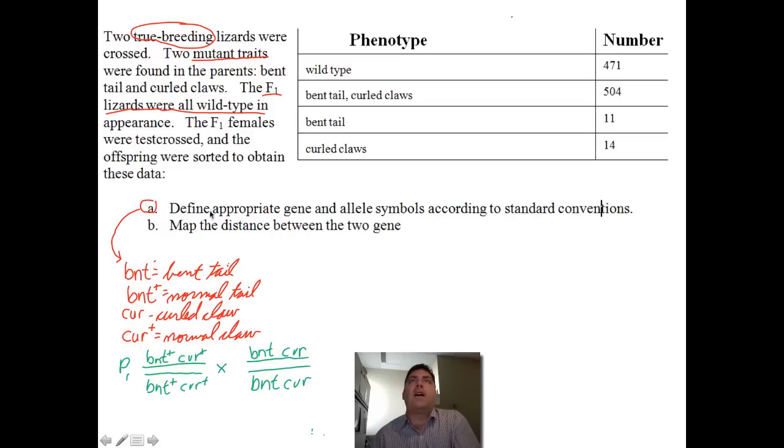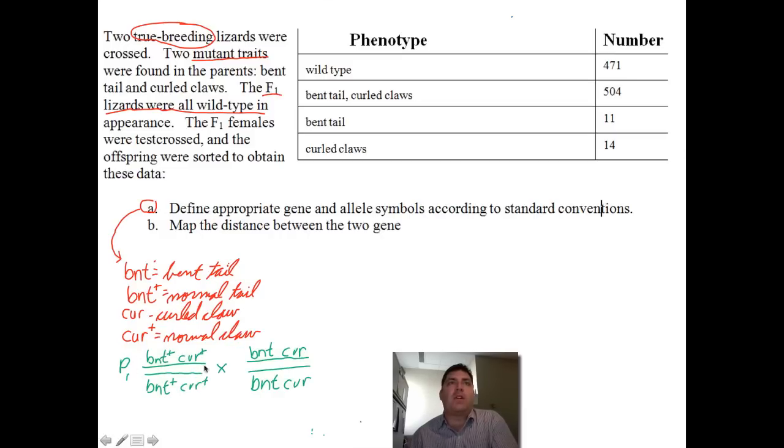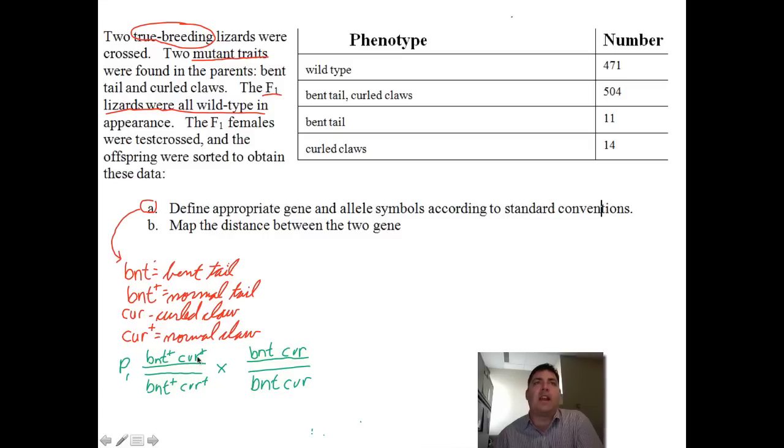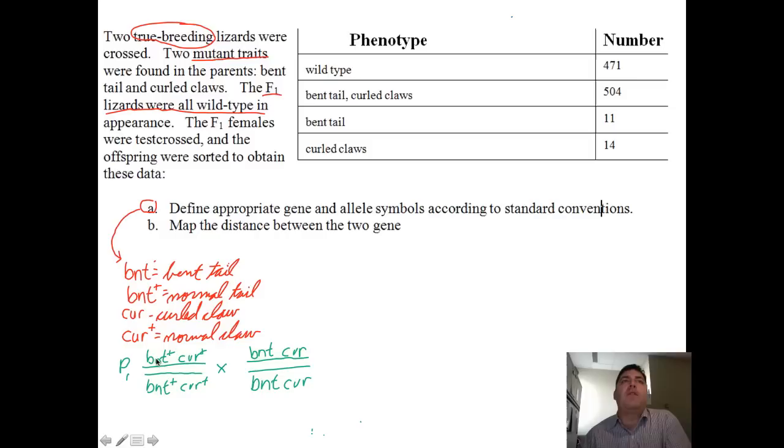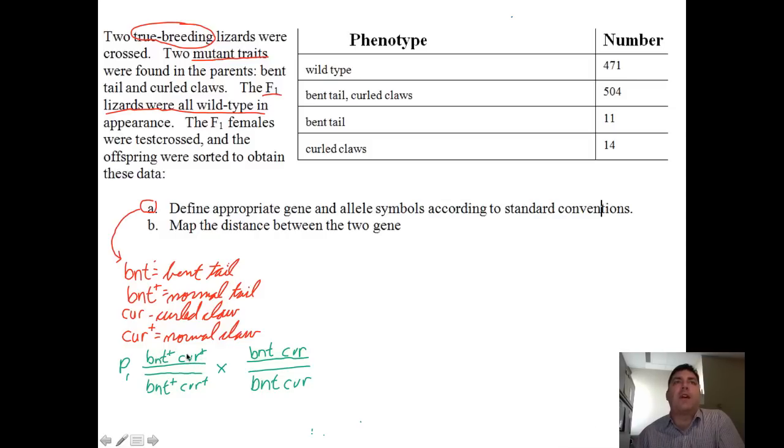So if we draw the parental situation, and we're going to look at this again in the next screen, we've got bnt+cur+, in coupling together, and bnt cur mutants also in coupling. Coupling just means that both the mutants are going together, the mutations are going together. Coupling also means the wild types also go together. So the F1 in this case has one chromosome with the wild type traits, one with the mutant traits, and this is the test cross we have here.